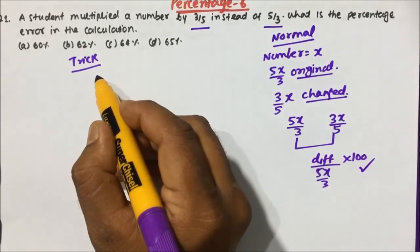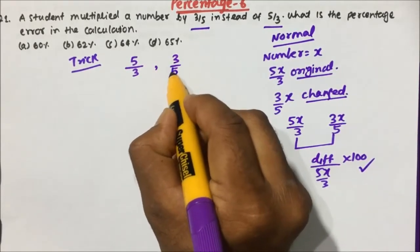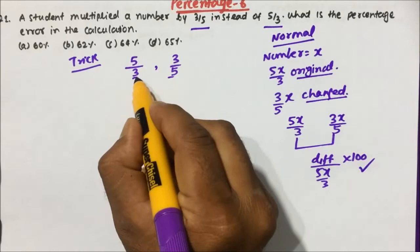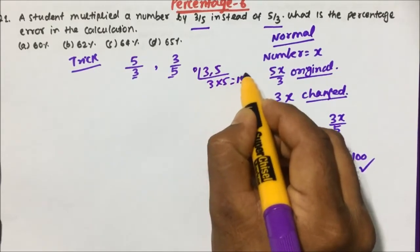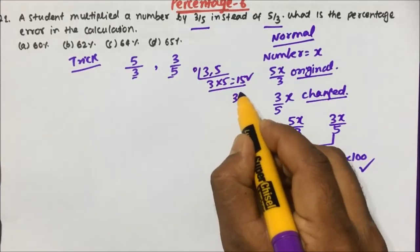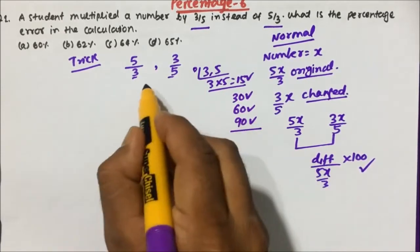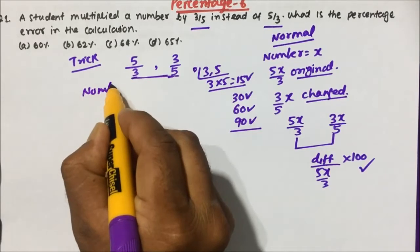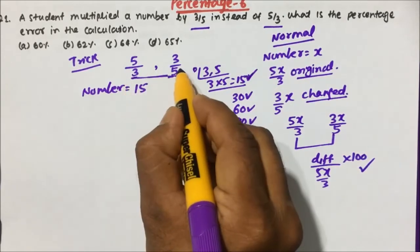Now we will see the trick — how easy it will be. Basically the student has to multiply by 5/3 but by mistake multiplied by 3/5. Since 5 and 3 are in the denominators, either take LCM or select a number divisible by both. So 15 — the least number divisible by both 3 and 5. Even 30, 60, or 90 would work, but 15 is the smallest for easy calculation.